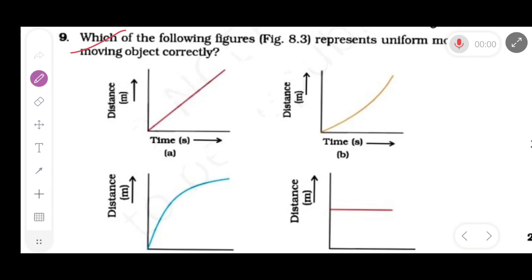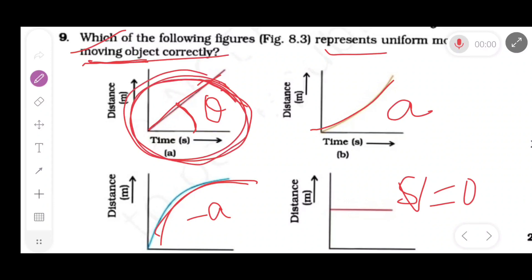Question number 9. Which of the following figure represents the uniform motion of an object? This graph represents the distance-time graph of constant slope. Here angle is always constant, so this graph represents the uniform speed or uniform motion. And this is the parabolic, this is the accelerated motion. This is the parabolic but downward slope, this is the retardation. And this is the distance-time graph of stationary body, that is V = 0. So for uniform motion, our option is A.